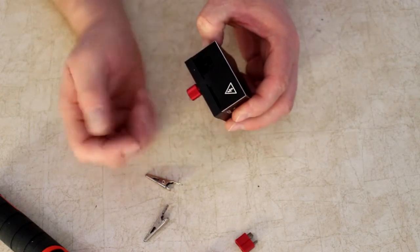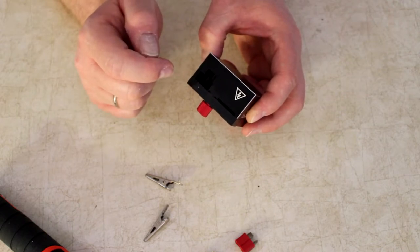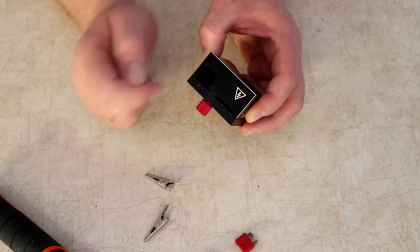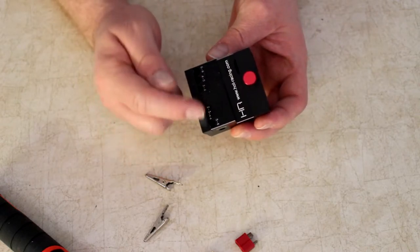You have Traxxas, you have pretty much here your Deans, your XT60s, ICs, ECs, and this side here, as I said, you have your bullets.